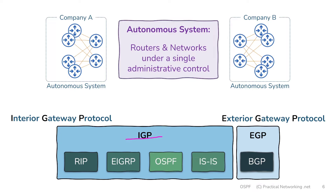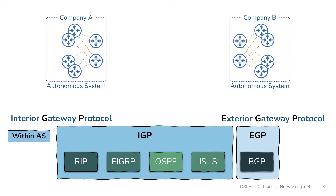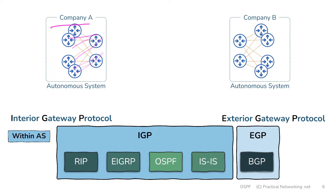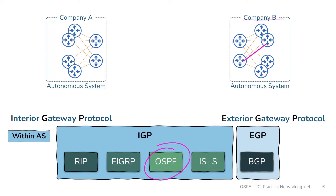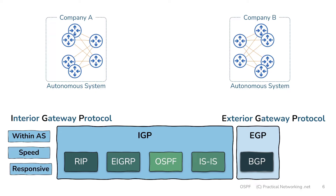An IGP is best suited for sharing routes within a particular autonomous system. The routers belonging to company A might be using EIGRP to talk amongst themselves and share the networks that exist inside company A, while routers belonging to company B might be using OSPF amongst themselves. IGPs are typically tuned for speed and responsiveness — if something were to happen to a router, the other routers in the topology would instantly know and adjust their routes. These IGPs tend to be pretty chatty, but that's the cost of the additional speed and responsiveness.